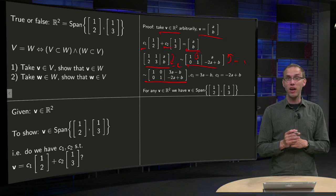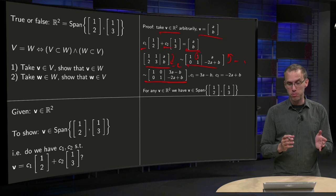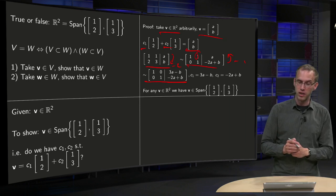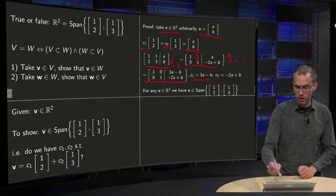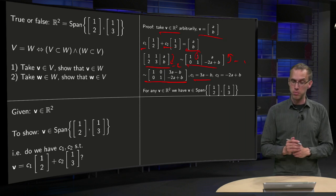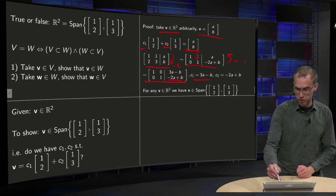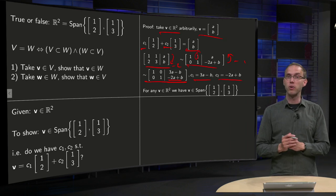And we see that we actually have a solution. We have 1 times C1 plus 0 times C2 equals 3a minus b, and 0 times C1 plus 1 times C2 equals minus 2a plus b, so C2 equals minus 2a plus b.